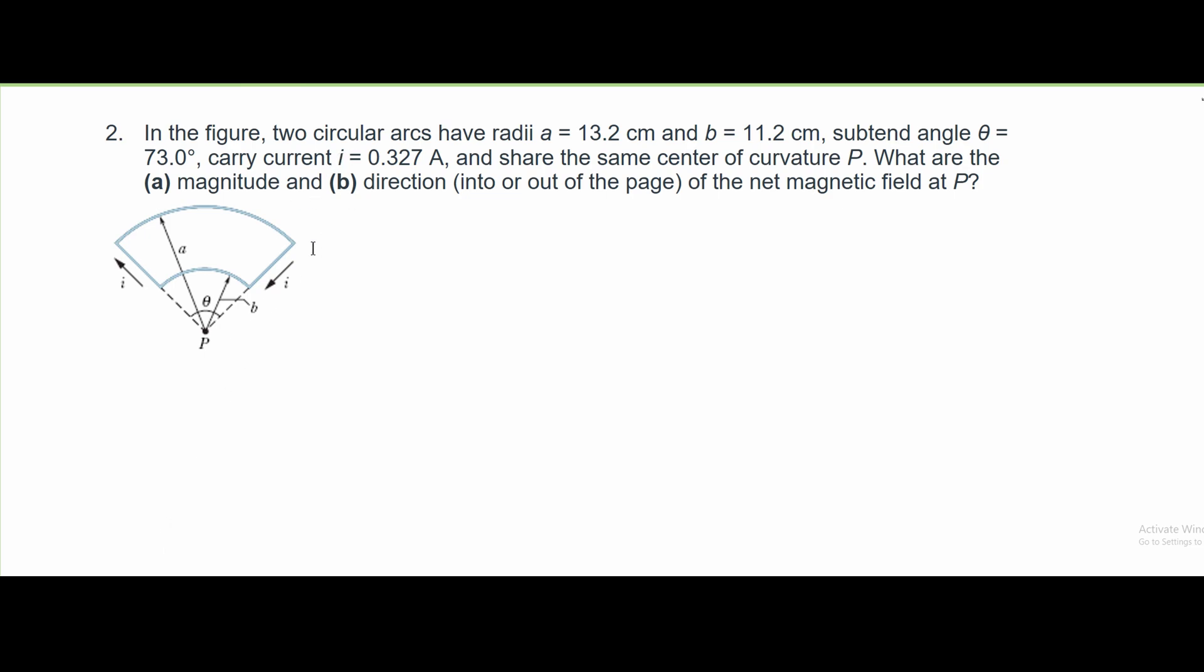In the figure, two circular arcs have radii a equals 13.2 centimeters and b equals 11.2 centimeters. The angle theta is equal to 73 degrees. The current I is equal to 0.327 amps and they share the same center of curvature P.